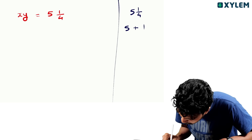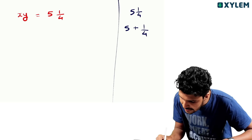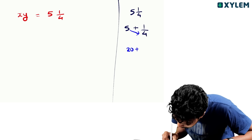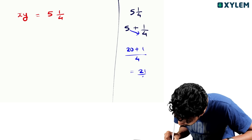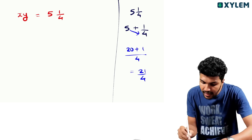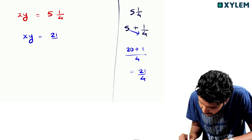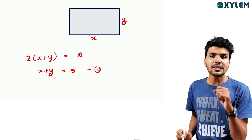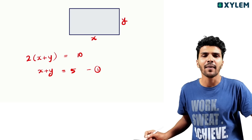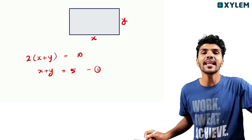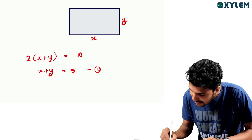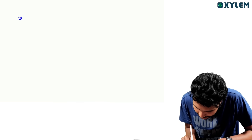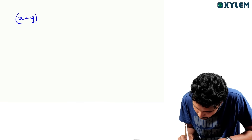5 plus 1 by 4 — that's how you do it. 5 into 4 is 20, plus 1 gives 21 by 4. So xy equals 21 by 4.